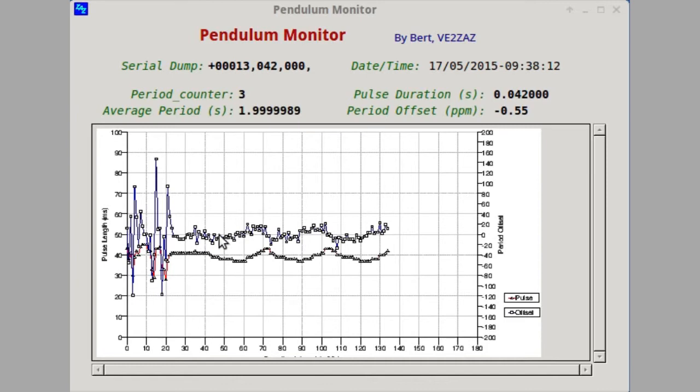The top curve shows the offset. And, of course, zero here means it's exactly two seconds on the nose. And this is not a big deviation here. We're talking of less than one part per million. Last one being 0.2.